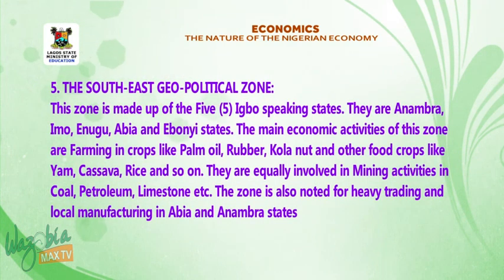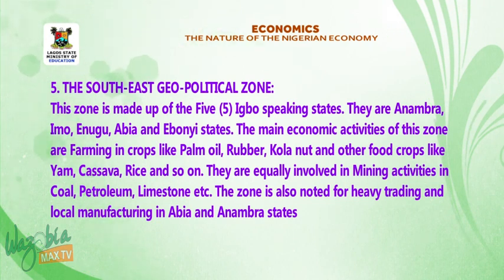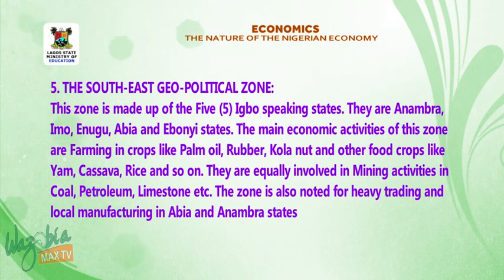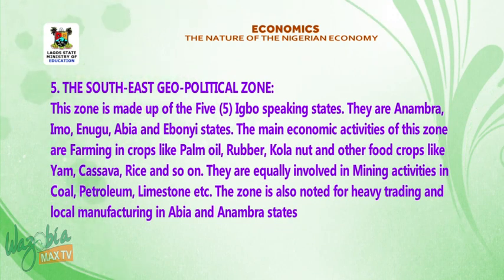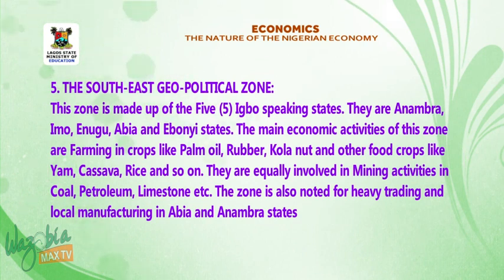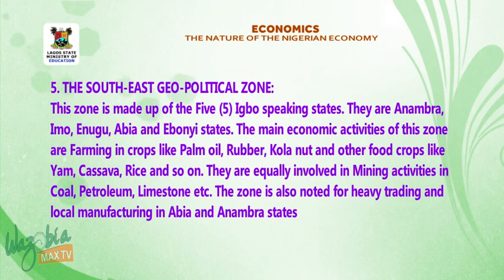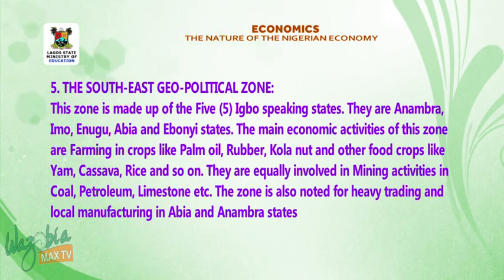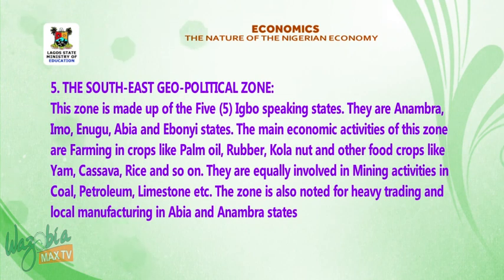Number five, the south-east geopolitical zone. This zone is made up of five Igbo-speaking states: Anambra, Imo, Enugu, Abia, and Ebonyi. The main economic activities of this zone are farming in crops like palm oil, rubber, kola nuts, and other food crops like yam, cassava, and rice. They are equally involved in mining activities in coal, petroleum, and limestone. The zone is also noted for heavy trading and local manufacturing in Abia and Anambra states.